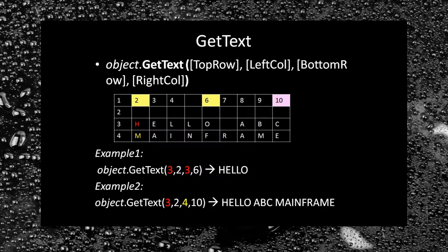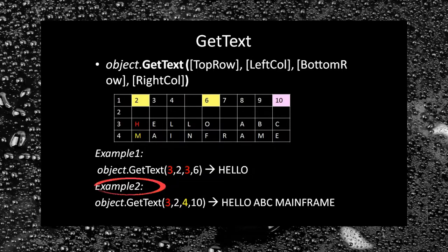The GetText method takes four parameters: top row, left column, bottom row, and right column. As mentioned, for UFT the entire TE Screen is like a two-dimensional array. In example one, I am retrieving values from the third row between columns two to six — the output would be 'hello'. In example two, I am retrieving values of the entire third and fourth rows — the output would be 'hello a b c mainframe'.